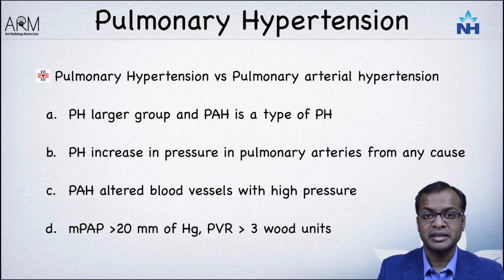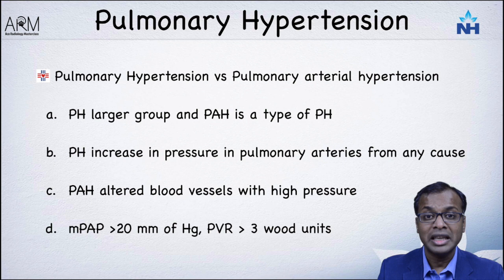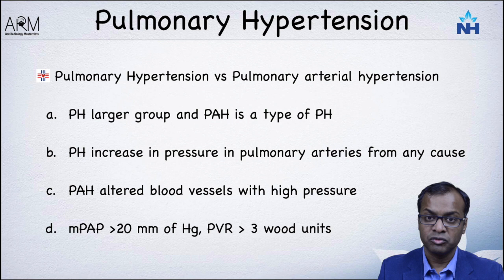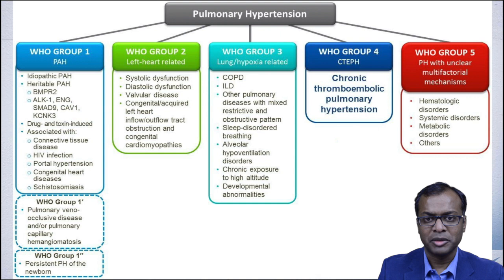In pulmonary arterial hypertension, the pulmonary arteries themselves are abnormal, leading to raised pulmonary pressures. While in pulmonary hypertension, it can be pulmonary veins or other pathologies such as lung disease causing the raised pressure. For pulmonary arterial hypertension, you need a mean pulmonary arterial pressure of more than 20 mmHg by definition, and a pulmonary vascular resistance of more than three Wood units. So PAH is secondary to abnormality of pulmonary arteries, while pulmonary hypertension is raised pulmonary pressure due to multiple etiologies.